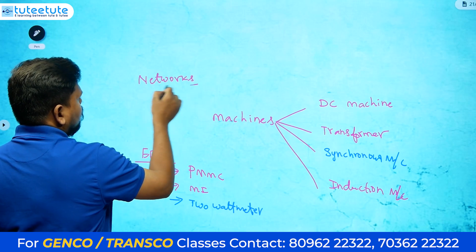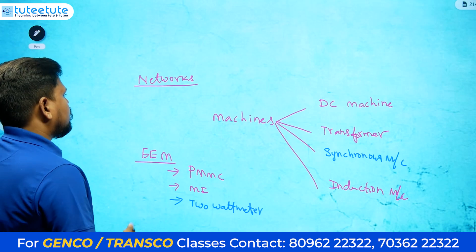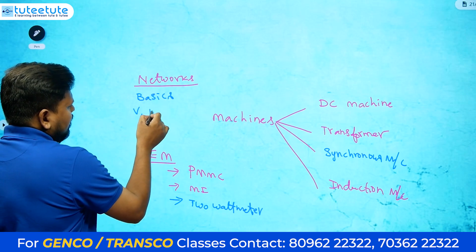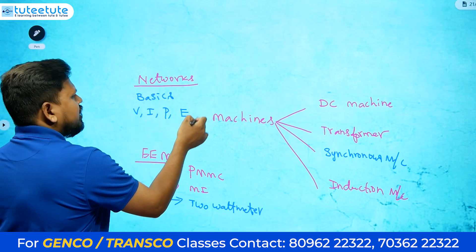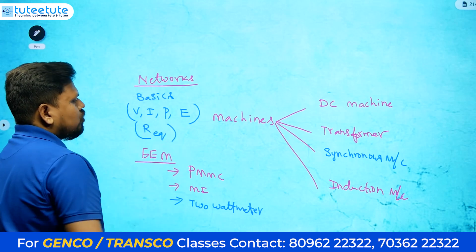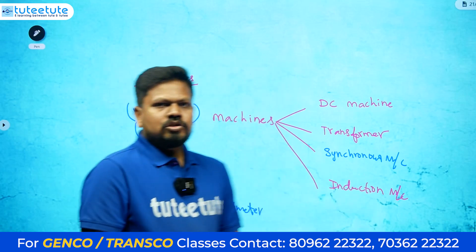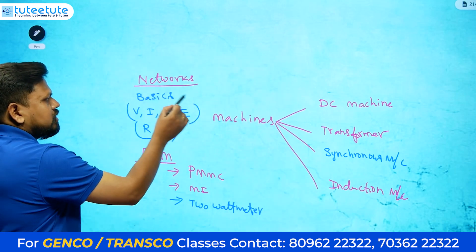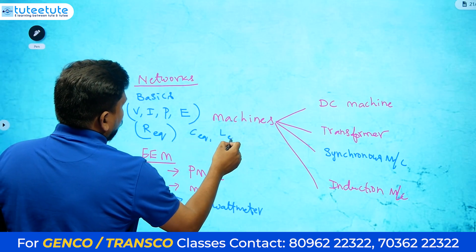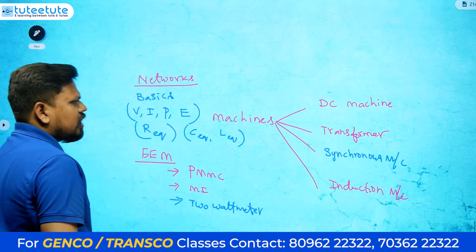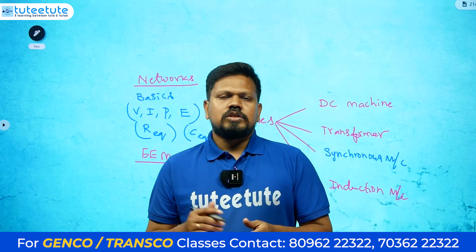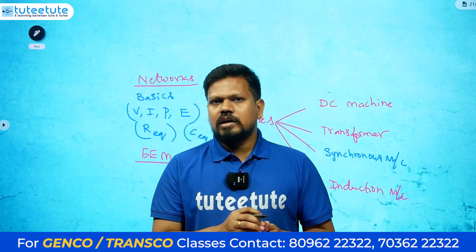For basic circuits — which is the same as networks — concentrate on the basics: voltage calculation, current calculation, power calculation, energy calculation, and resistance calculation such as R equivalent between two terminals. Similarly, C equivalent and L equivalent calculations are required. You can complete all these concepts in about five hours. If you know these concepts and that type of question comes, you will definitely get the correct answer.